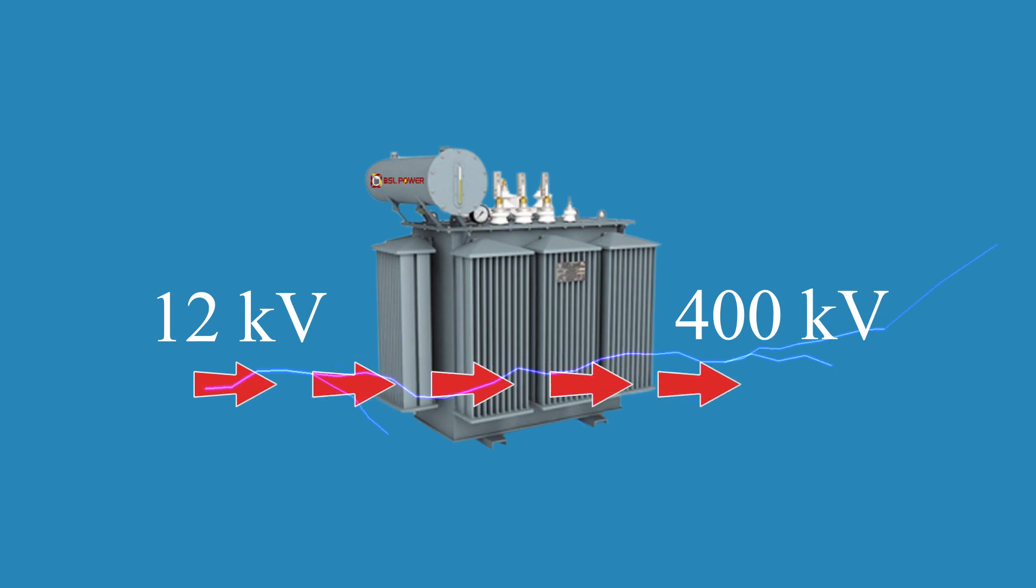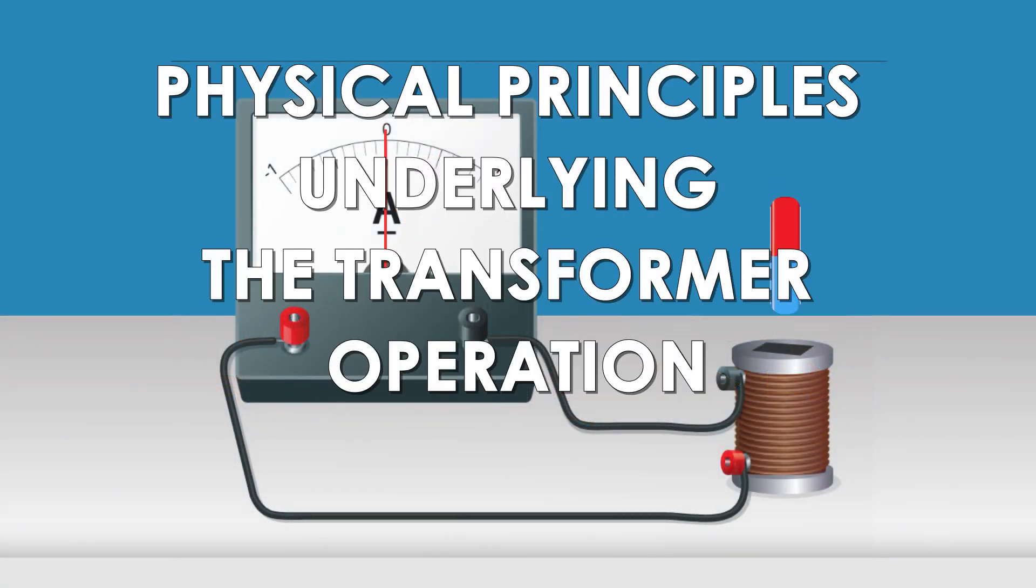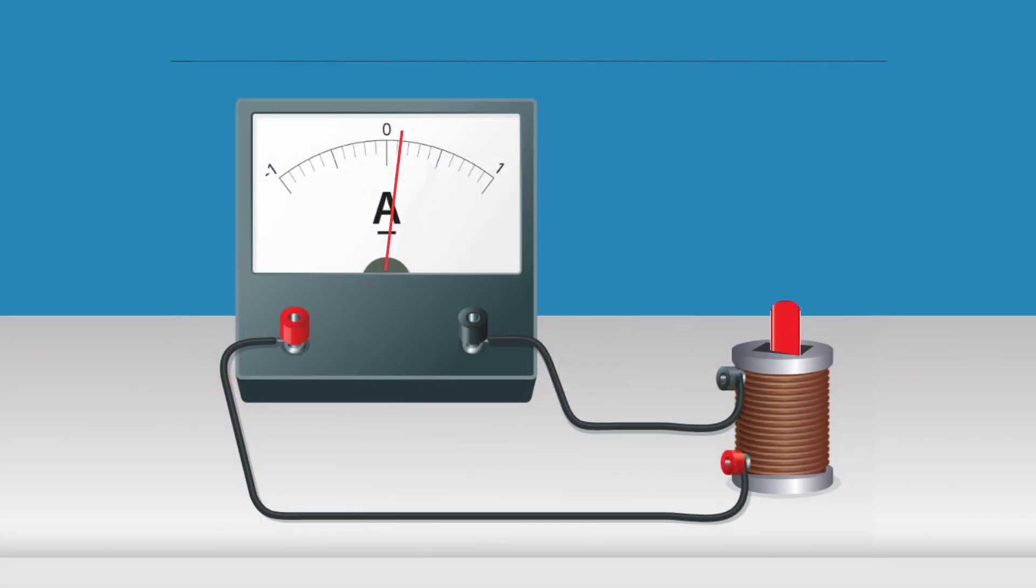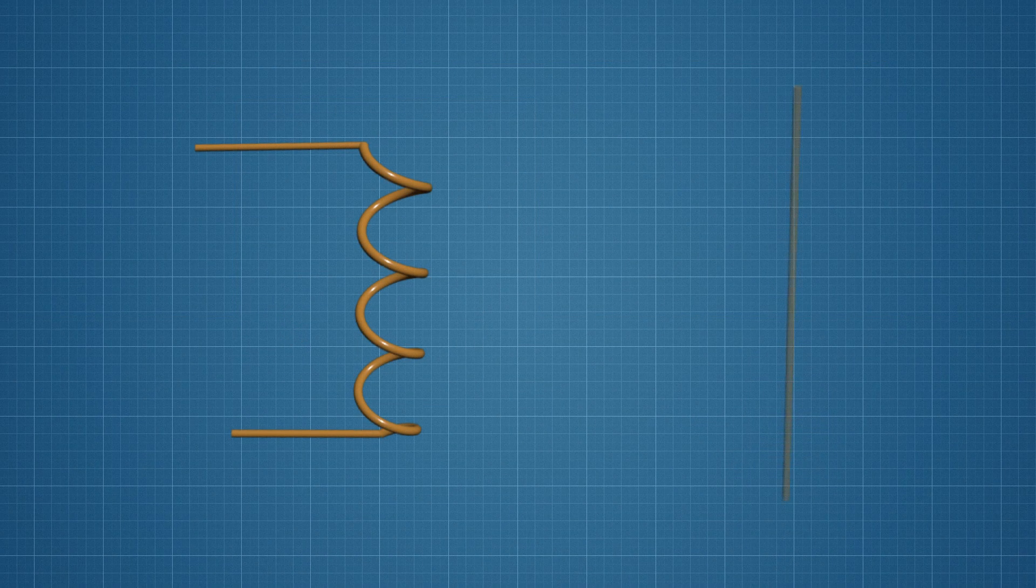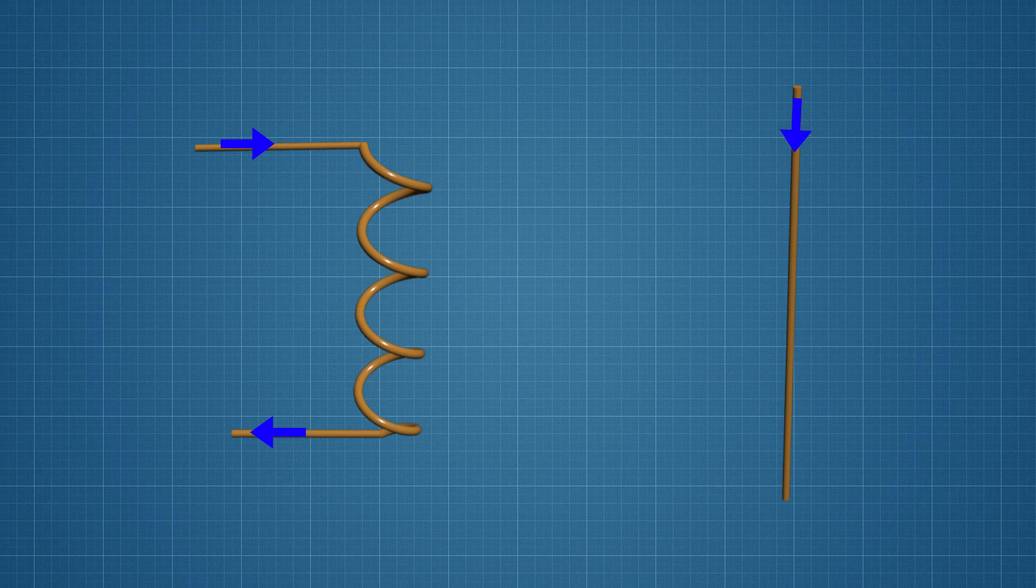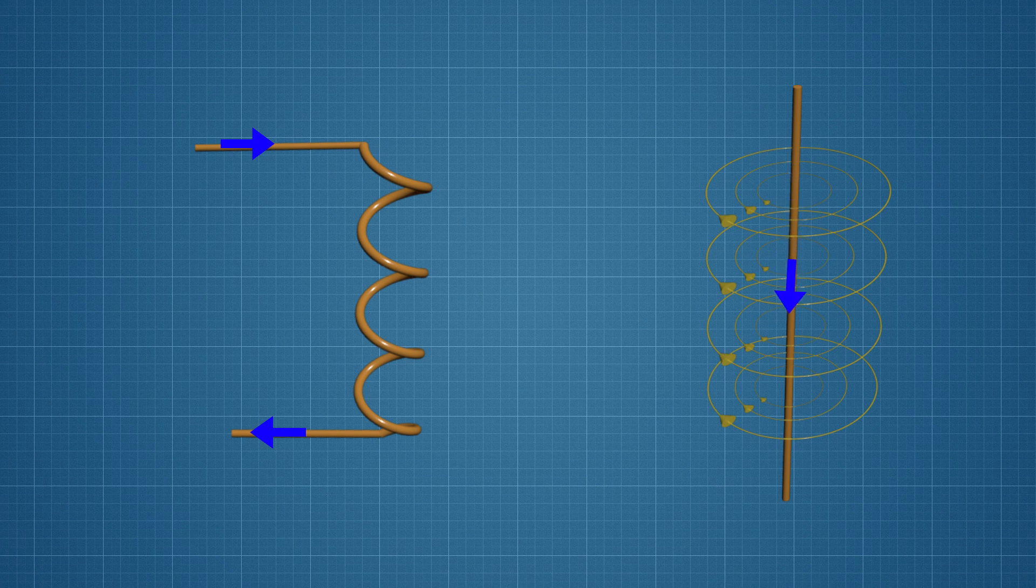The operation principle of the simplest transformer is based on electromagnetic induction. This phenomenon consists in the fact that if there is a closed conducting loop in a magnetic field with no current sources, then electric current begins to flow in the loop when the magnetic field changes. The occurrence of current indicates the emergence of an electromotive force (EMF).